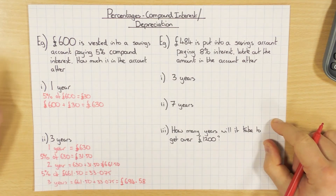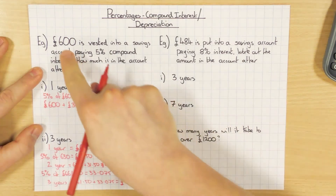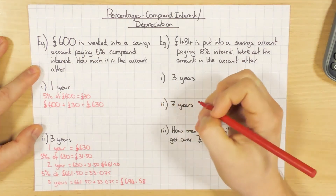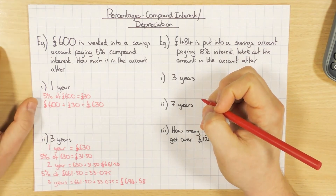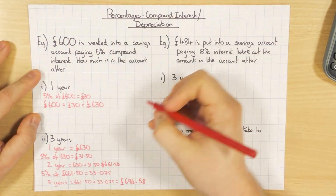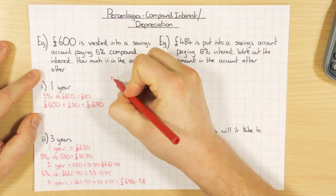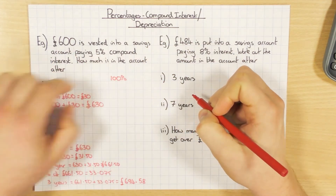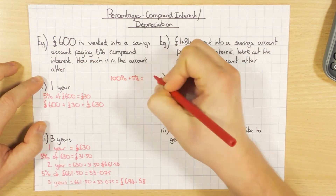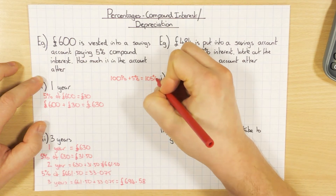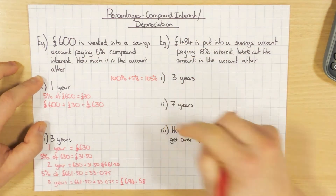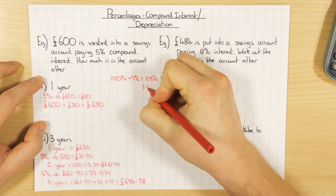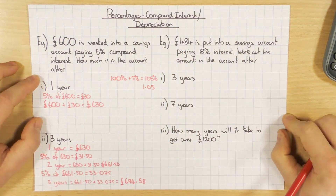That's the long way of doing it. There's a slightly quicker and easier way. If I'm going to increase an amount by 5%, I need to work out the decimal multiplier. We always start off with 100%, and in this case our 100% is the 600. If I'm increasing by 5%, I add 5%, giving me 105%. To convert that to a decimal, I divide by 100, giving me 1.05. That's my decimal multiplier.